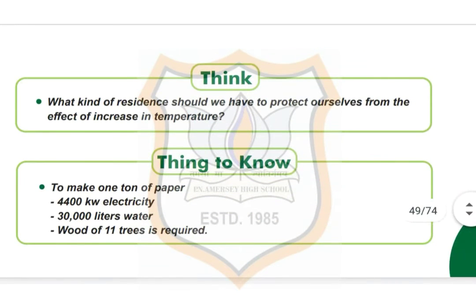Things to know: to make one ton of paper, 4400 kilowatt-hours of electricity, 30,000 liters of water, and wood from 11 trees is required.